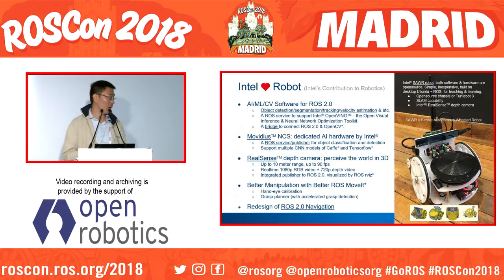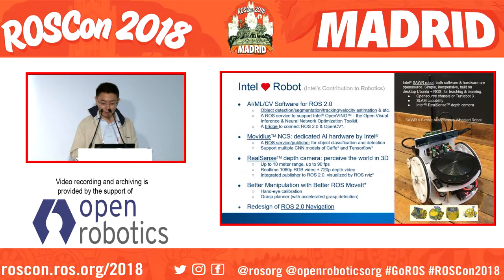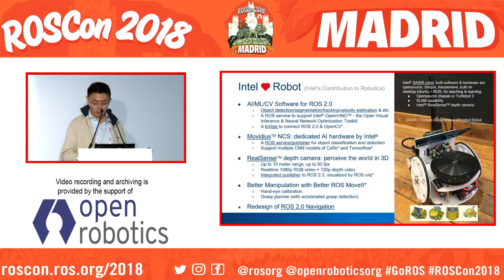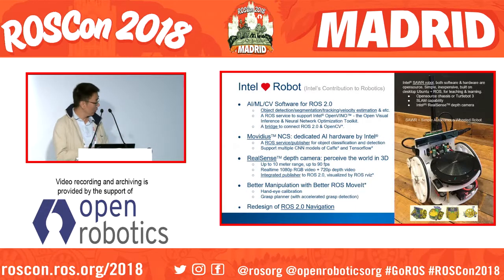The previous pages are all about the contributions to ROS done by our team. On this page I've listed other Intel open source projects that I know of. There are ROS services and bridges about AI, machine learning, and computer vision — publishers for dedicated AI hardware manufactured by Intel and for a 3D camera made by Intel. There is also a navigation stack for ROS2, and an open source robot that is open source in both hardware and software.